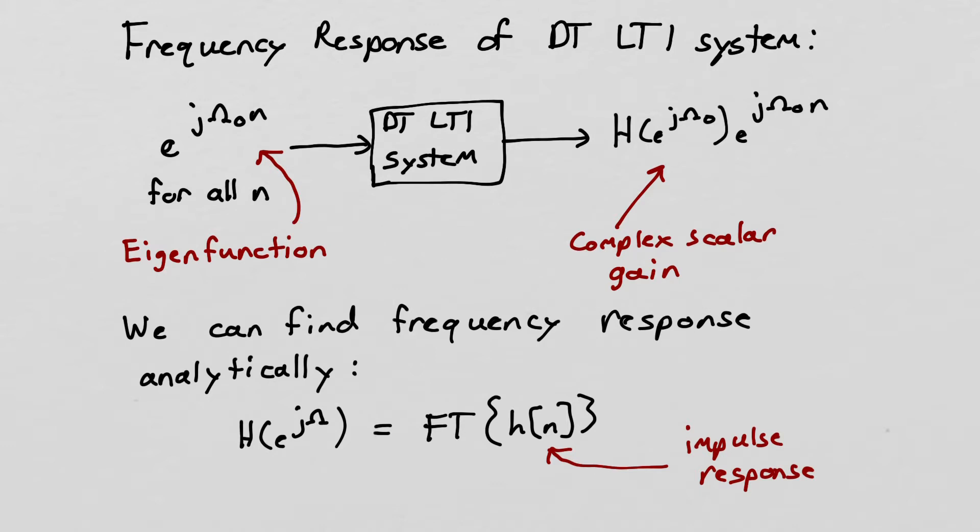So for instance, we put in the complex exponential e to the j omega 0 n for all n into the DT LTI system and what we get out is that same complex exponential multiplied by a complex scalar gain. And that complex scalar gain is h of e to the j omega 0. It's the frequency response of the system evaluated at the frequency of the input exponential.